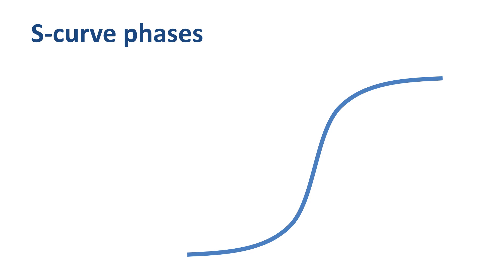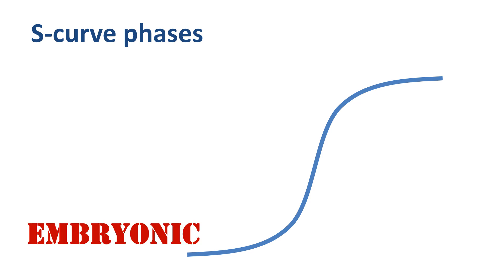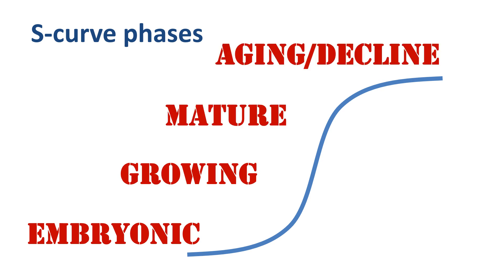Let's take a look at the business lifecycle of acquisition targets ABC and DEF. Companies start off as embryonic or emerging, then go through growth, maturity, and ultimately aging and decline. Maybe ABC is a mature company that currently generates a good level of net income, but is getting close to its peak and has very few growth prospects. DEF, on the other hand, could be an embryonic company that has not generated any net income yet, but is about to launch a product that has the potential of generating billions of dollars in the future.